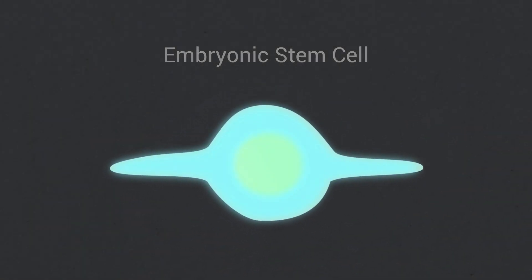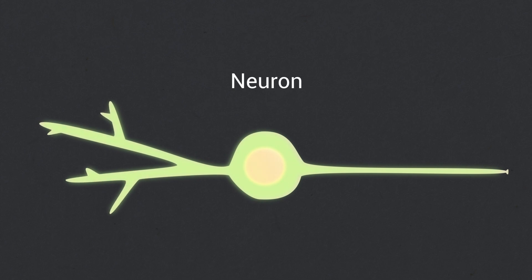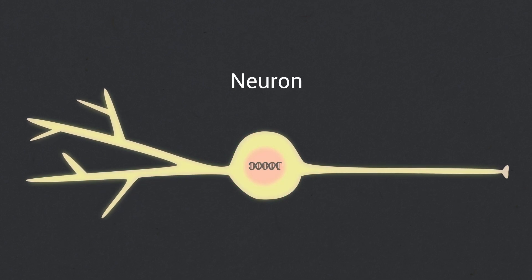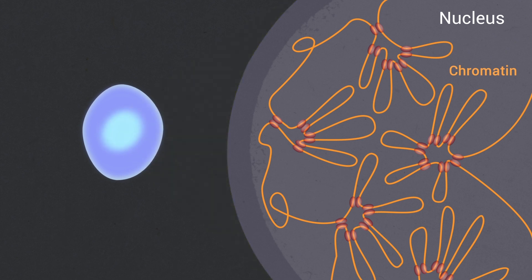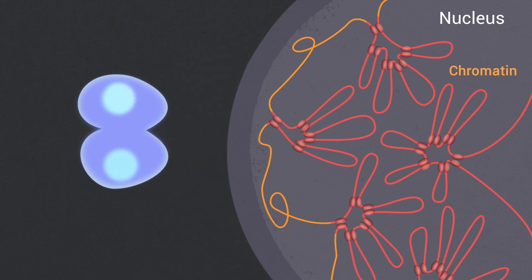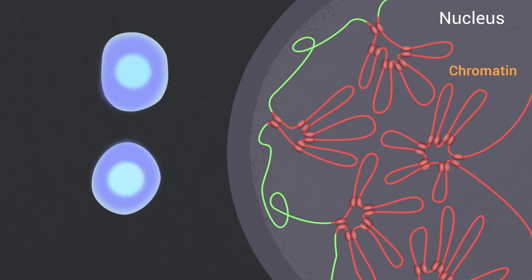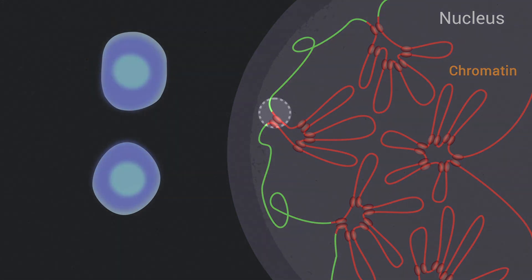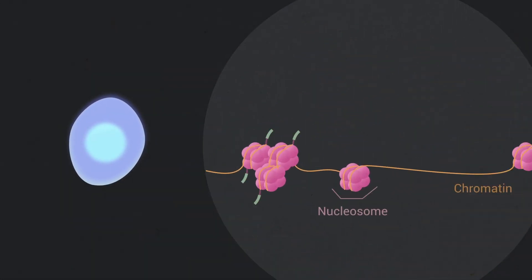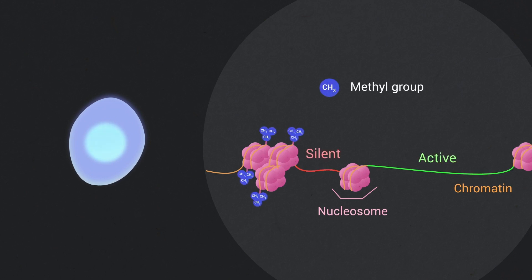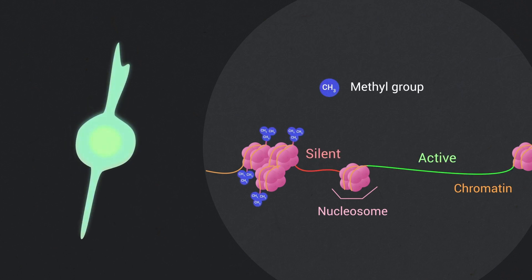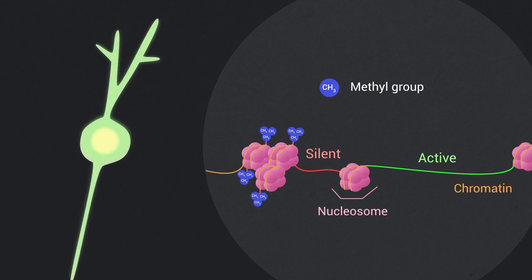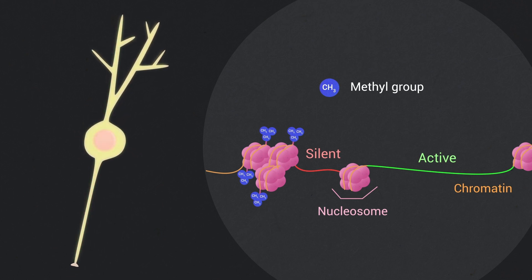Cellular identity is now accepted to be the result of the expression of a specific combination of genes. Chromatin is recognized to act as a carrier of epigenetic marks that can propagate active and silent activity states during cell division. Recent studies have underlined the importance of chromatin and DNA methylation as epigenetic barriers that prevent a rapid loss of active or inactive gene expression states that could lead to a change in identity.